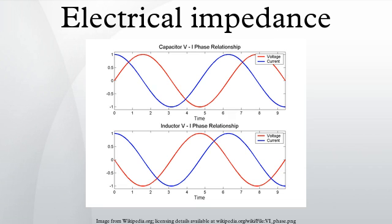The symbol for impedance is usually Z, and it may be represented by writing its magnitude and phase in the form Z∠θ. However, complex number representation is often more powerful for circuit analysis purposes. The term impedance was coined by Oliver Heaviside in July 1886. Arthur Kennelly was the first to represent impedance with complex numbers in 1893.